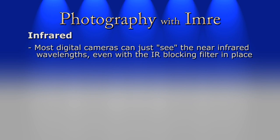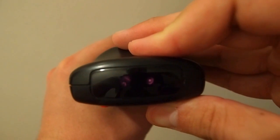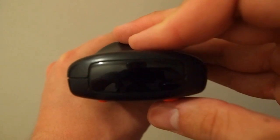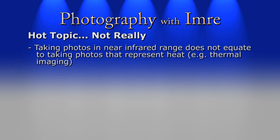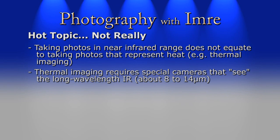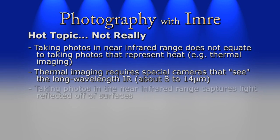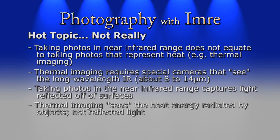Longer wavelengths than that are invisible to us. To our digital cameras, that near infrared range is just barely visible, even though there is an infrared blocking filter that sits right in front of the sensor. An easy way to demonstrate that a digital camera can see into this range is to simply take a remote control, point it towards the lens, and hit a few buttons — there you have it, the infrared light glows for the camera even though we humans cannot see it. Now, taking photos in this near infrared range does not mean we are taking photos that represent heat. In order to perform thermal imaging, specialized equipment is required which can see the long-wavelength infrared range, sitting between about 8 to 14 or 15 micrometers. When taking photos in the near infrared range we capture light that reflects off surfaces, such as sunlight off trees and buildings, but when we take thermal photos we are seeing the heat energy that an object is radiating — not reflected light.